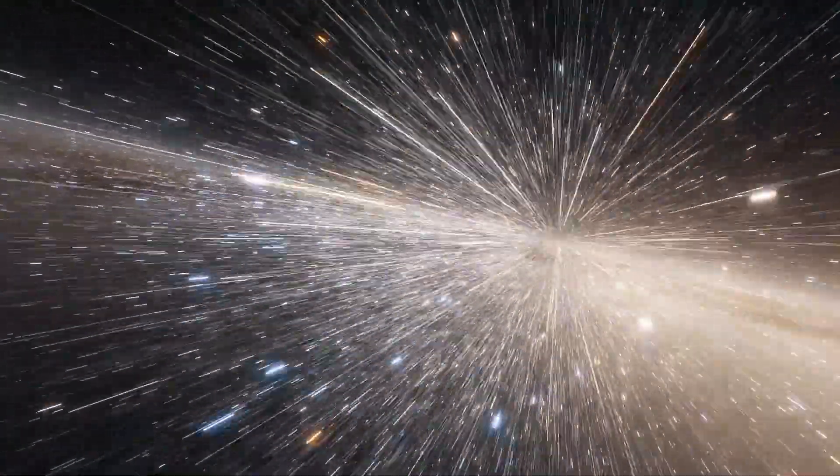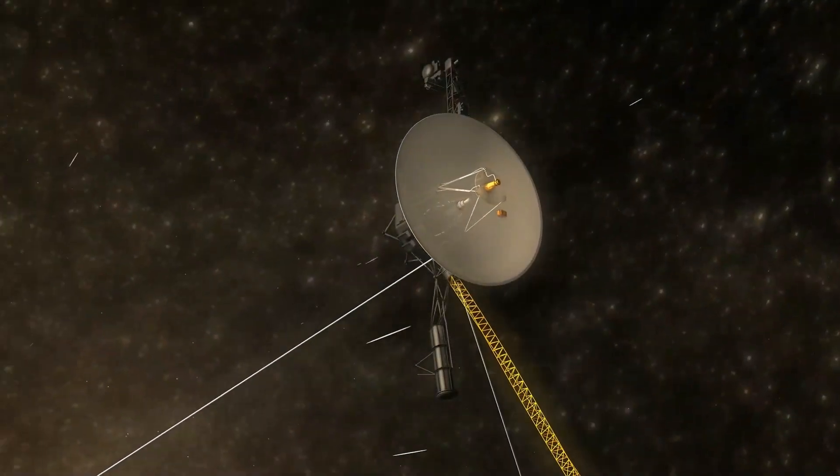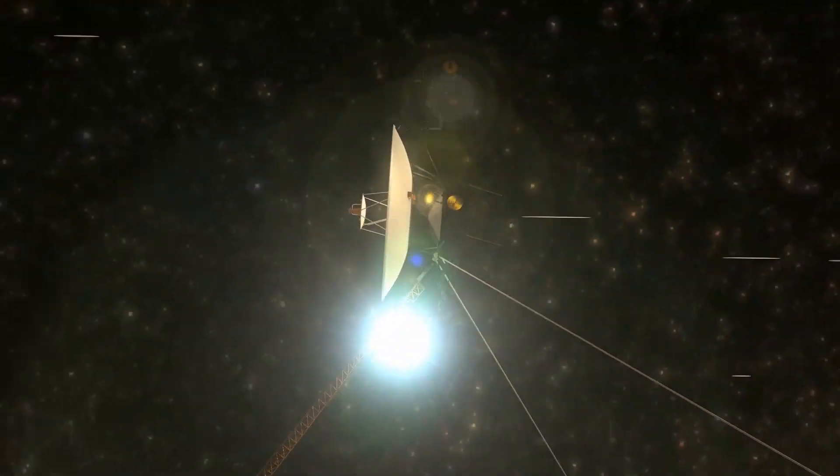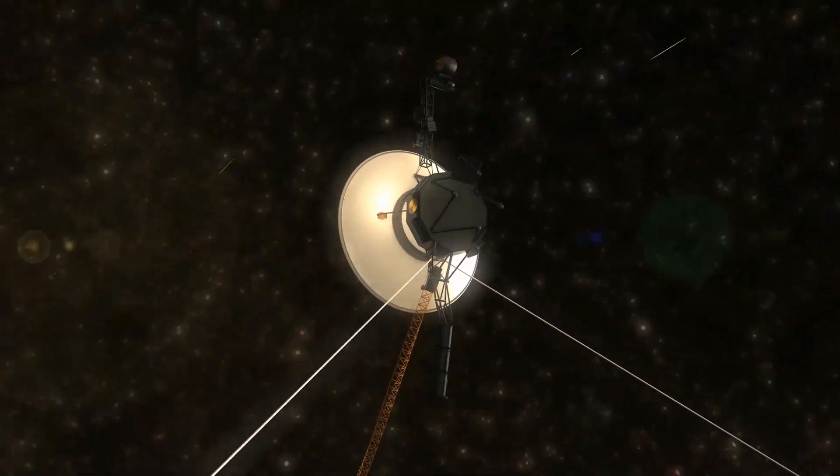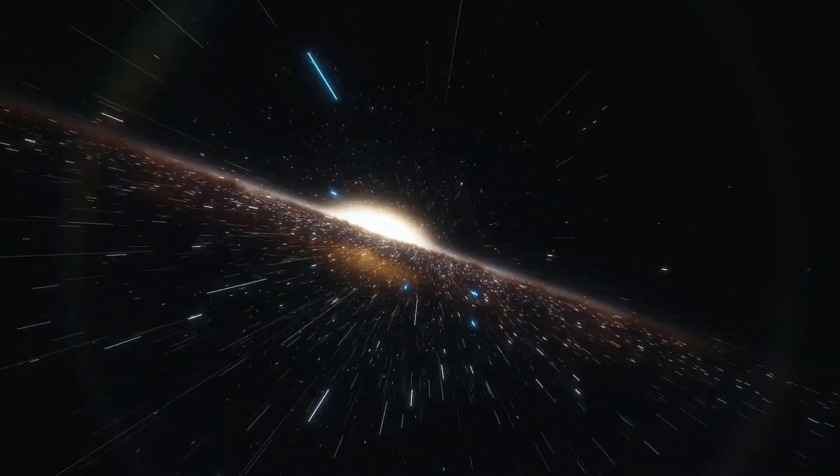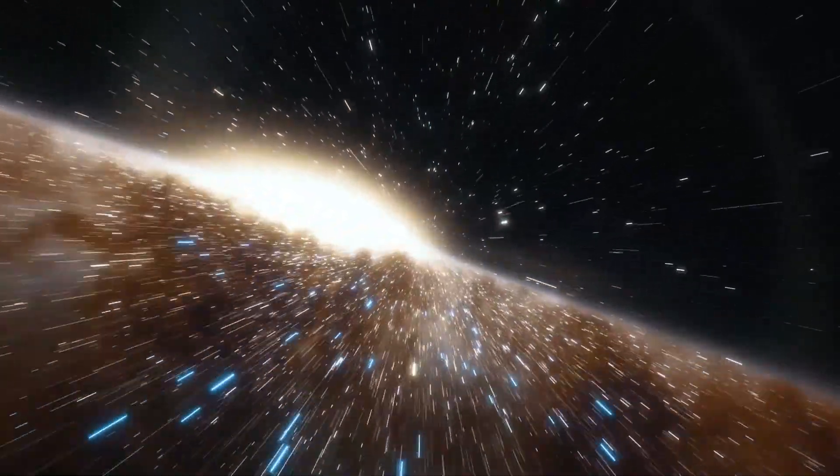As a result of their success, the mission has been extended three times as they continue to transmit useful scientific data. It was confirmed that on August 25, 2012, Voyager 1 had become the first man-made object to exit the solar system and enter interstellar space. A few years later, it was also confirmed that Voyager 2 would enter interstellar space in 2018.